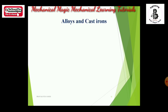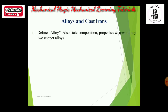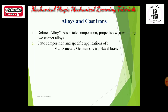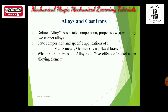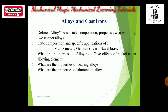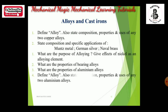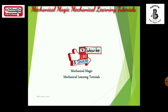Some important questions from alloys and cast irons: define alloys and state composition, properties, and uses of any two copper alloys for 7 marks; state composition and specific applications of Muntz metal, German silver, and naval brass for 4 marks; purpose of alloying and effect of nickel as an alloying element for 7 marks; properties of bearing alloys for 7 marks; properties of aluminum alloys for 7 marks; define alloy and state composition, property, and use of any two aluminum alloys for 7 marks; and explain why alloys are used. These are all the important questions from material science and metallurgy.